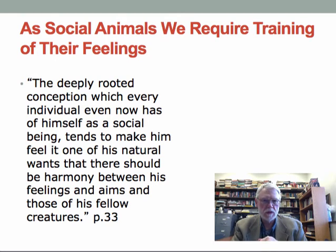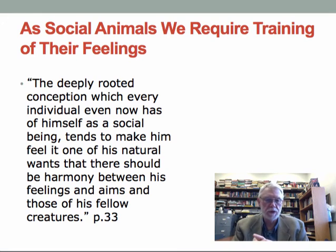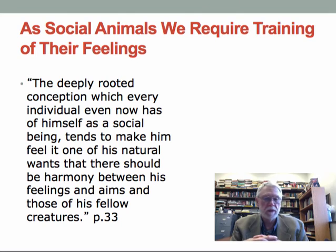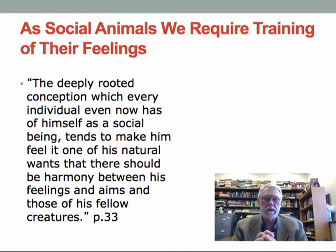As social animals we require training of feelings. We train children — someone falls on the sidewalk, you don't laugh; you teach children to care about other people. Mill says the deeply rooted conception of oneself as a social being tends to make a person feel it one of his natural wants that there should be harmony between his feelings and aims and those of his fellow creatures. We watch others, learn from them, and want to be part of the social group.